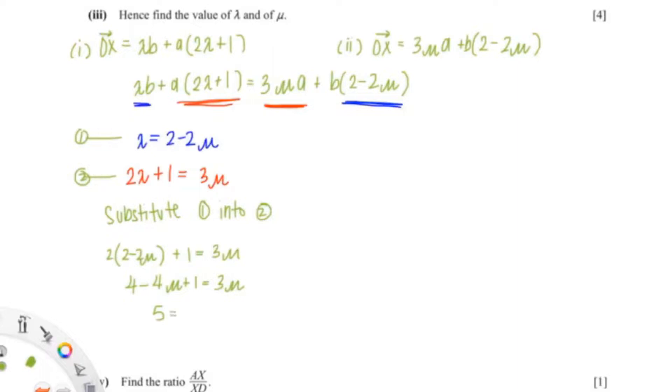4 plus 1 is 5 and we'll bring 4 mu to the other side which would be 7 mu. So mu equals to 5 over 7. Since we found mu we can find lambda using that equation. So lambda equals to 2 minus 2 bracket 5 over 7. And that should give you 4 over 7. So mu equals to 5 over 7 and lambda equals to 4 over 7.